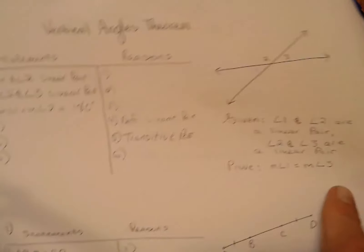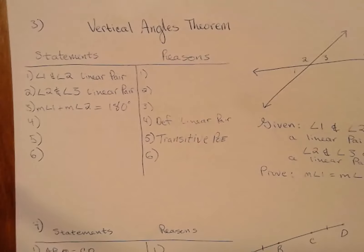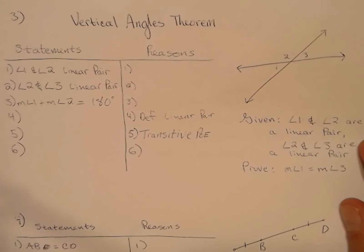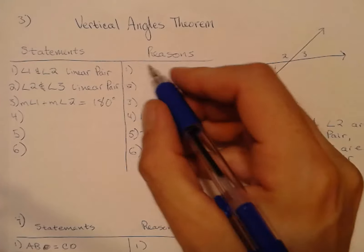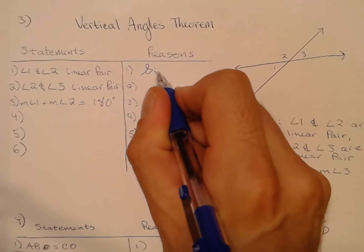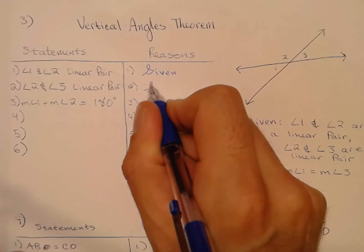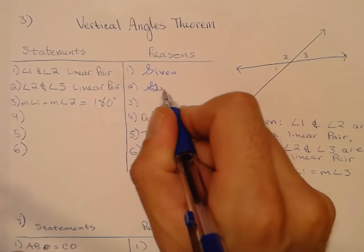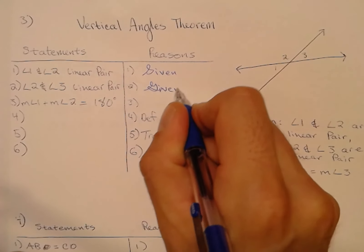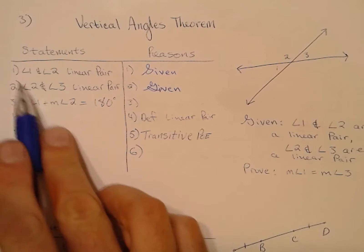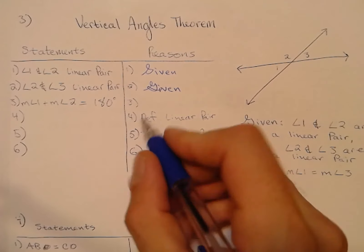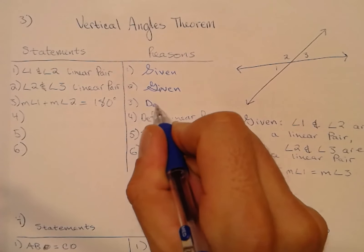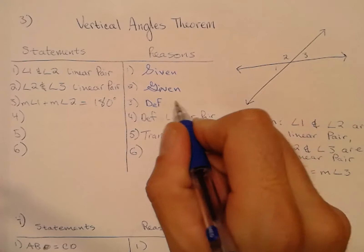The solutions will once again be on its learning. The first two statements are given to us. What does it mean to be a linear pair? It means the angles are supplementary — so we use the Definition of Linear Pair here.